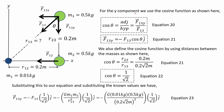For the y-component we use the cosine function, as shown in equation 20. The equation shows that the cosine function is the ratio of the adjacent side over the hypotenuse length. Rewriting it, we get an expression for the y-component given in equation 21. We see it is a negative value because it is pointed downward in the negative y-direction, so it is a negative j-hat value.